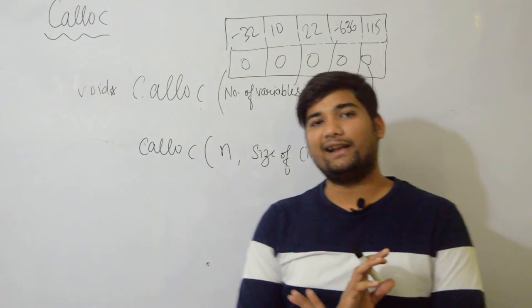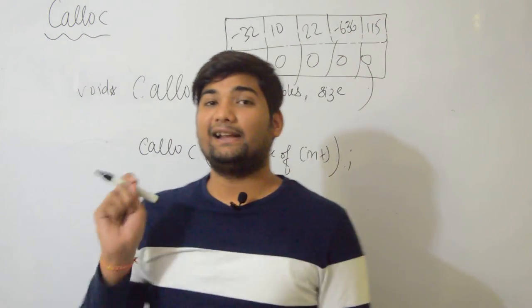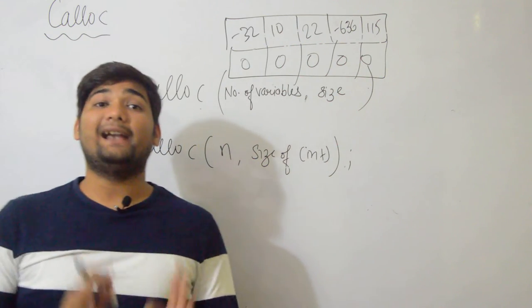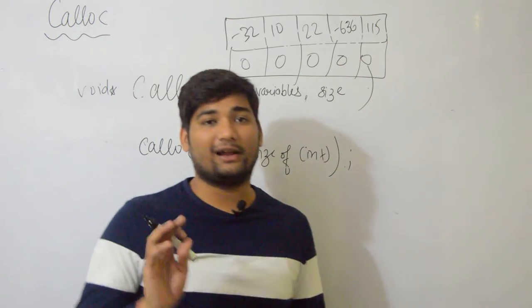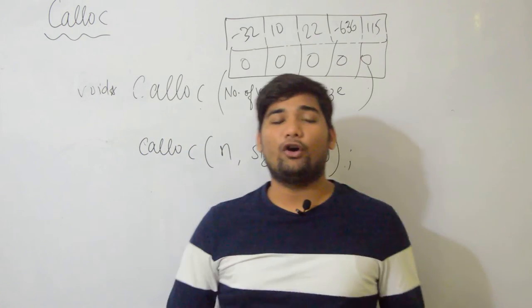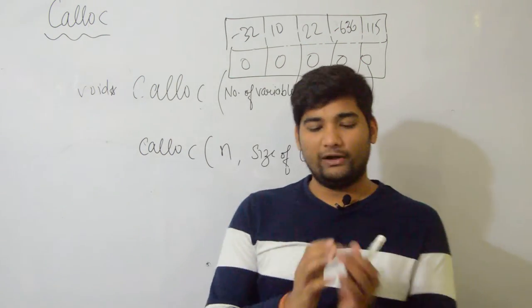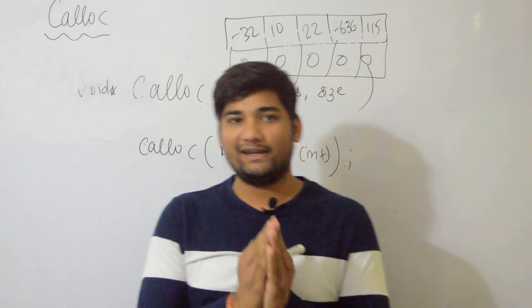While malloc doesn't do this, malloc just takes the memory and gives it with garbage values initially. But calloc has all zero values in the memory by default. Whenever you call calloc, tell me what happens.